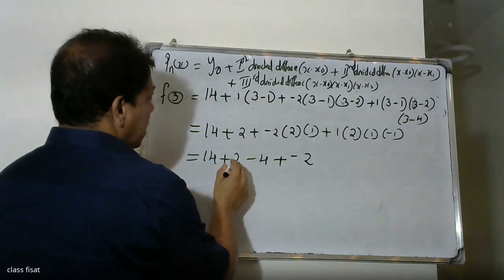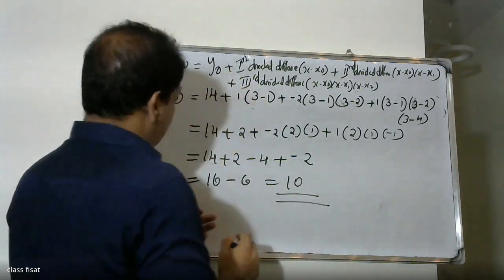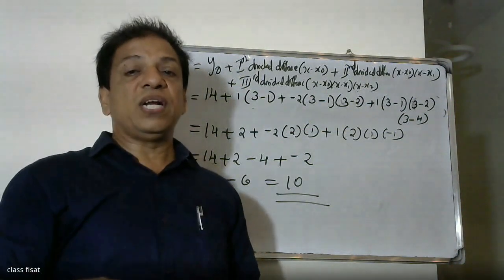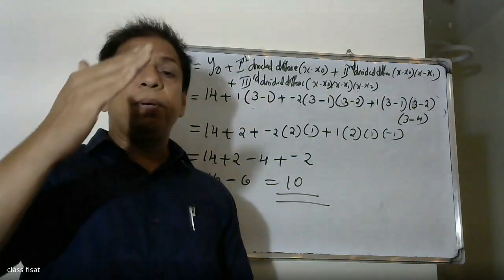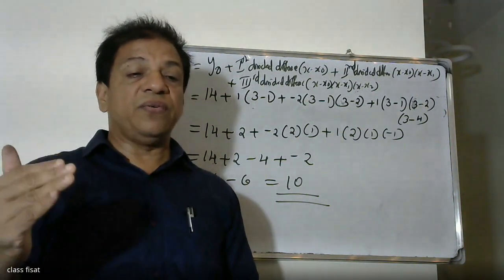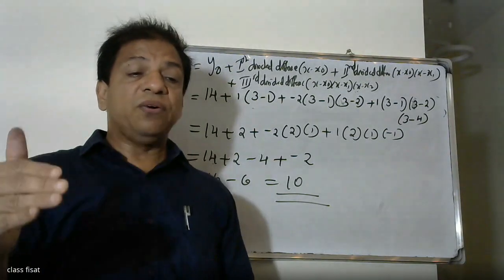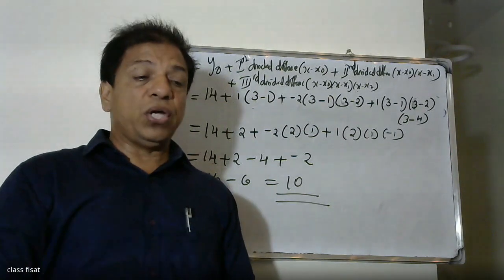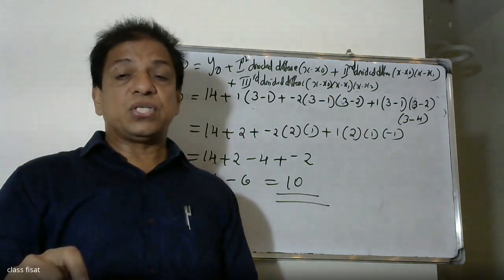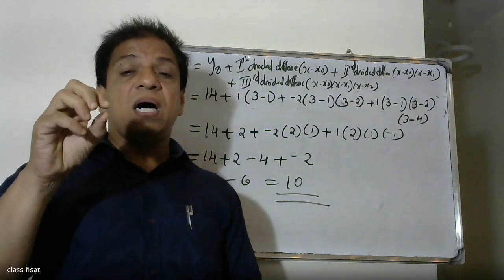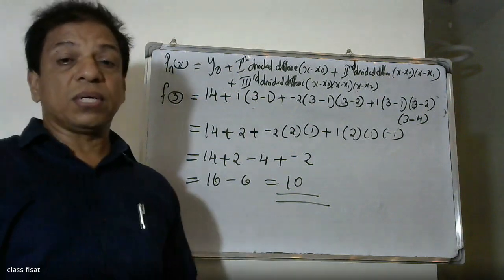So if we get to the value, we get to the value of 14 minus 4 minus 4. We will substitute the y0 value, x into value, x1 into value, and x0 into value. We will substitute it and simplify it to get the final answer.